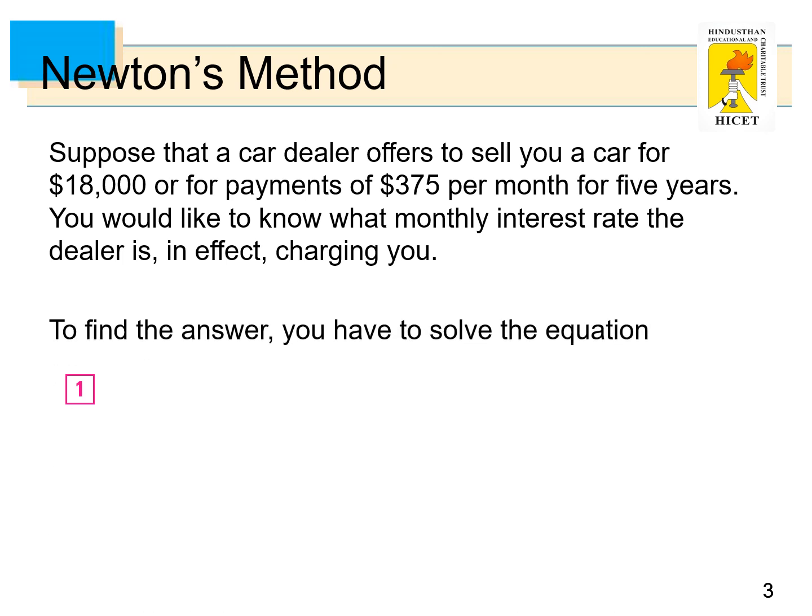To find this answer, you have to solve the equation 48x(1+x)^60 - (1+x)^60 + 1 = 0.